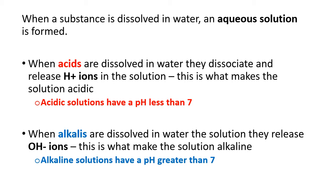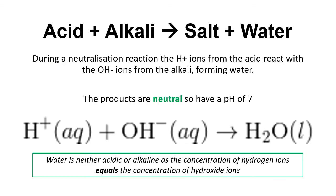Acids plus alkalis make salt and water. This is a neutralisation reaction because the products are neutral — they have a pH of 7. During this reaction, the hydrogen ions from the acid react with the hydroxide ions from the alkali and water is formed as a result. Water is neutral because the concentration of hydrogen ions equals the concentration of hydroxide ions.